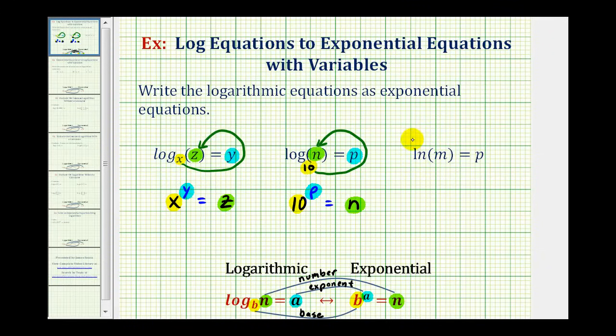And for the last example, we have ln, which is natural log. So we have natural log m equals p. Natural log means the base is e. So we have our base, we have our exponent, and we have our number. So e raised to the power of p must equal m.